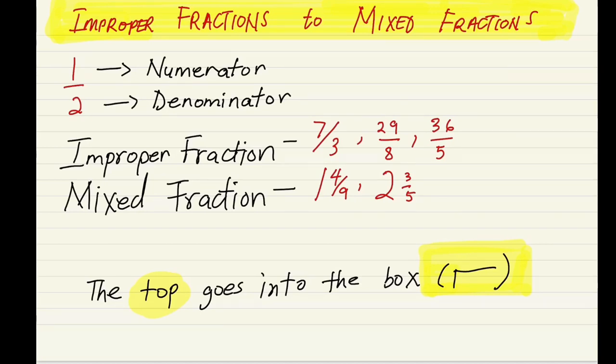So improper fractions - it's simply a fraction where the top number is greater than the bottom number. So for example we have 7 out of 3. The top number is greater than 3. Same as this one where it's 29 out of 8 where 29 is greater than 8.